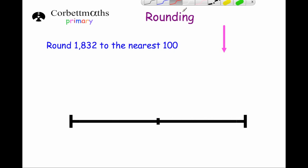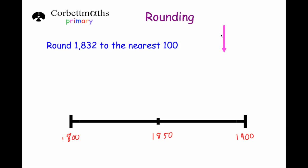Our next question asks us to round 1,832 to the nearest hundred. The multiple of 100 below 1,832 is 1,800, above it is 1,900, and in the middle is 1,850. Since 1,832 is around about here on the number line, it's closer to 1,800 than to 1,900. So the answer is 1,800.